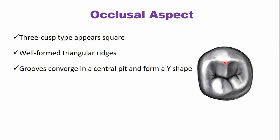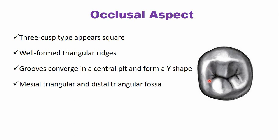Because this tooth usually has three cusps, the term 'bicuspid' is not correct for premolars, as they may have more than two cusps. Just adjacent to the marginal ridges — the mesial marginal ridge and distal marginal ridge — there are triangular depressions known as the mesial triangular fossa and the distal triangular fossa.